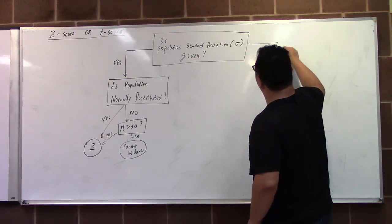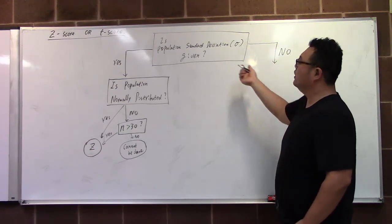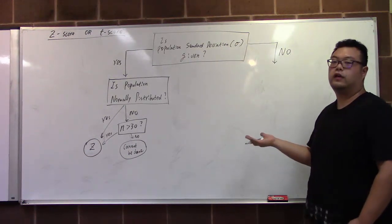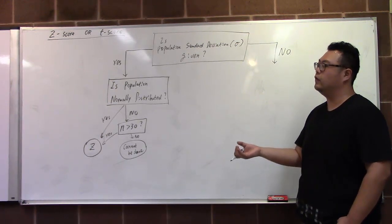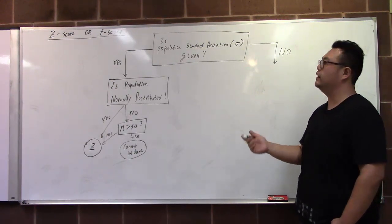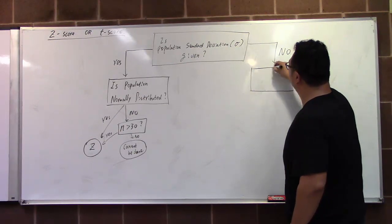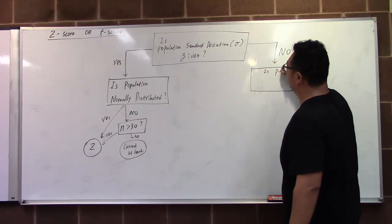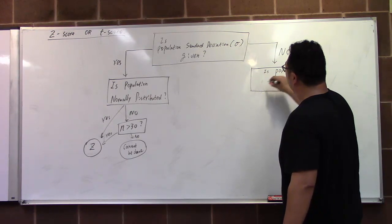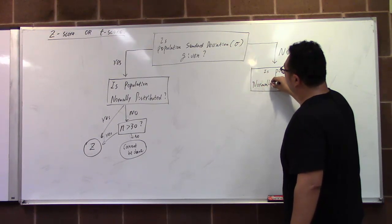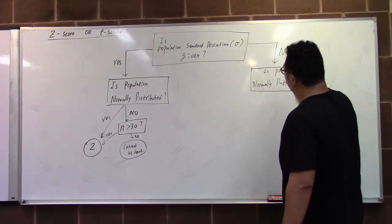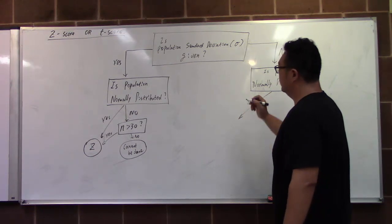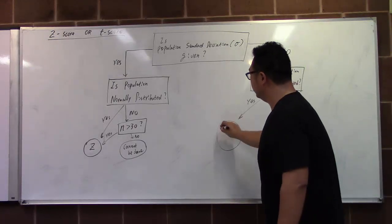If not — if the population standard deviation is not given — then the question should provide us a sample standard deviation. The same question applies: is the population normally distributed? If we know the population is normal, then we can use the t-score, because we do not know the spread of the population but we know the spread of the sample, so we approximate using the t-distribution.